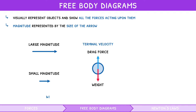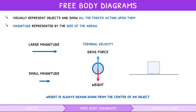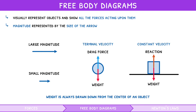Note that weight is always drawn down from the centre of an object. A more advanced free body diagram is of an applied force moving a block at a constant velocity. Here the weight of the box is acting down and the reaction force is acting up with equal magnitude. At the same time, the applied force is acting right on the box, and dynamic friction is acting left with equal magnitude.